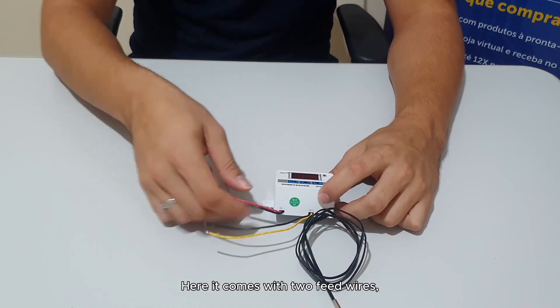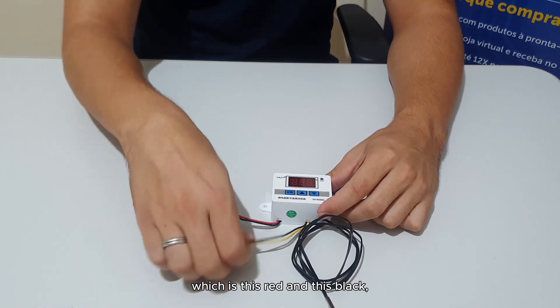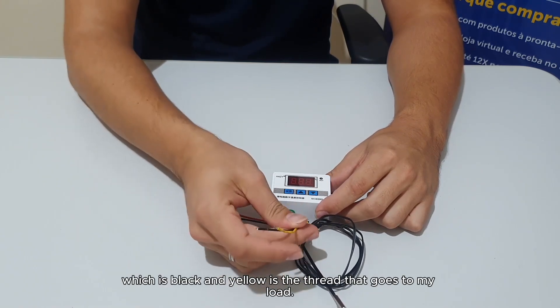Here it comes with two feed wires which are red and black. These two which are black and yellow are the wires that go to my load.